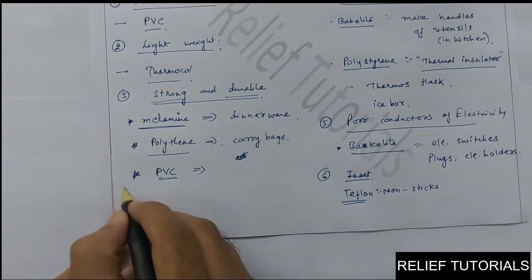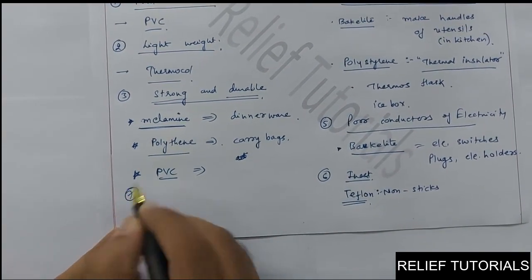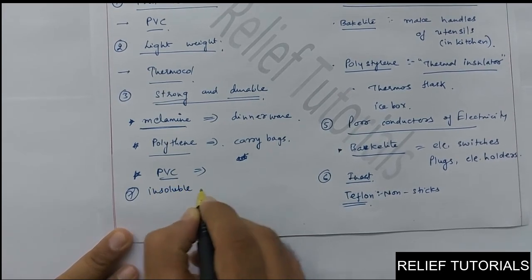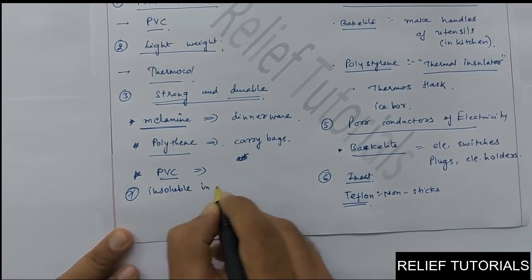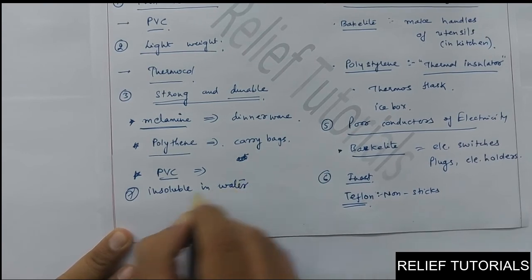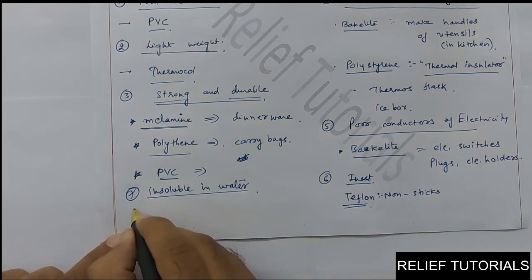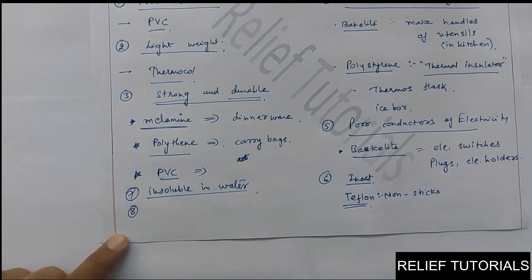Seventh property: plastics are insoluble in water, so we can easily store water in containers made from plastic.